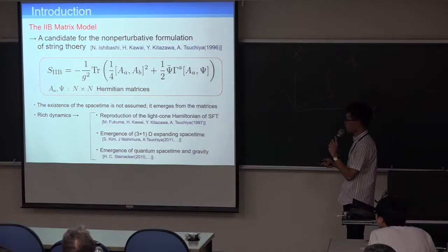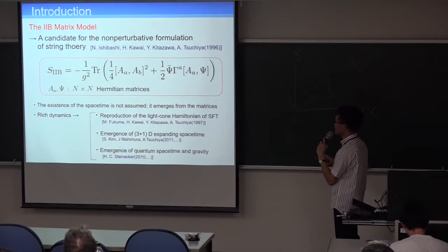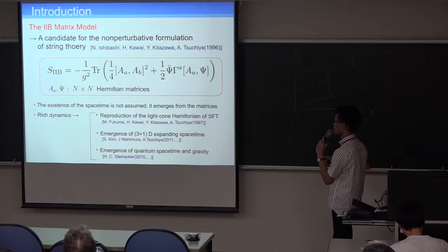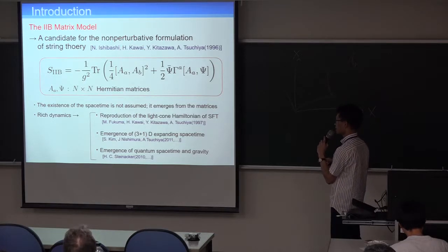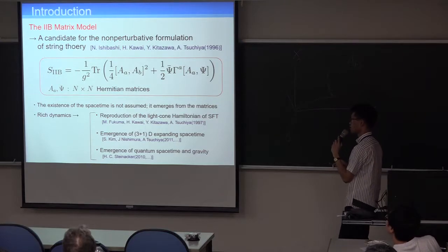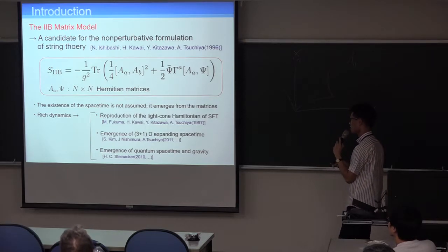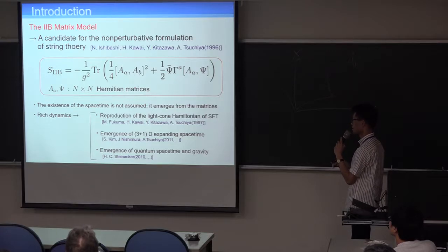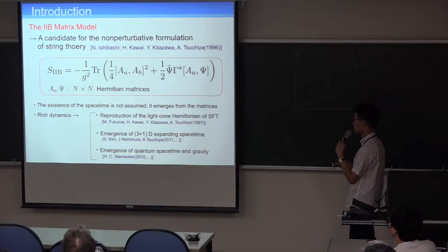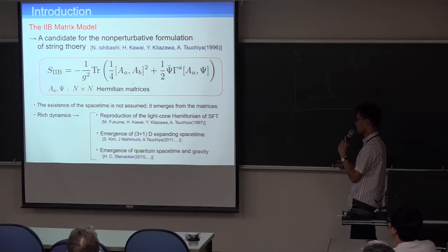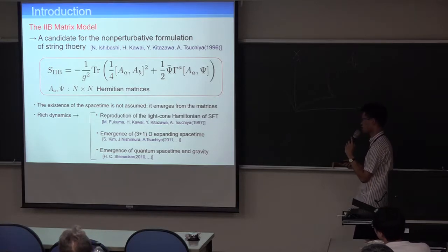and you have already seen the matrix model in Steinaka-san's talk. And the 2B matrix model, YKG matrix model, is a candidate for the nonperturbative formulation of string theory. The most interesting feature of the model is that the existence of the space-time is not assumed, and it emerges from the matrices.